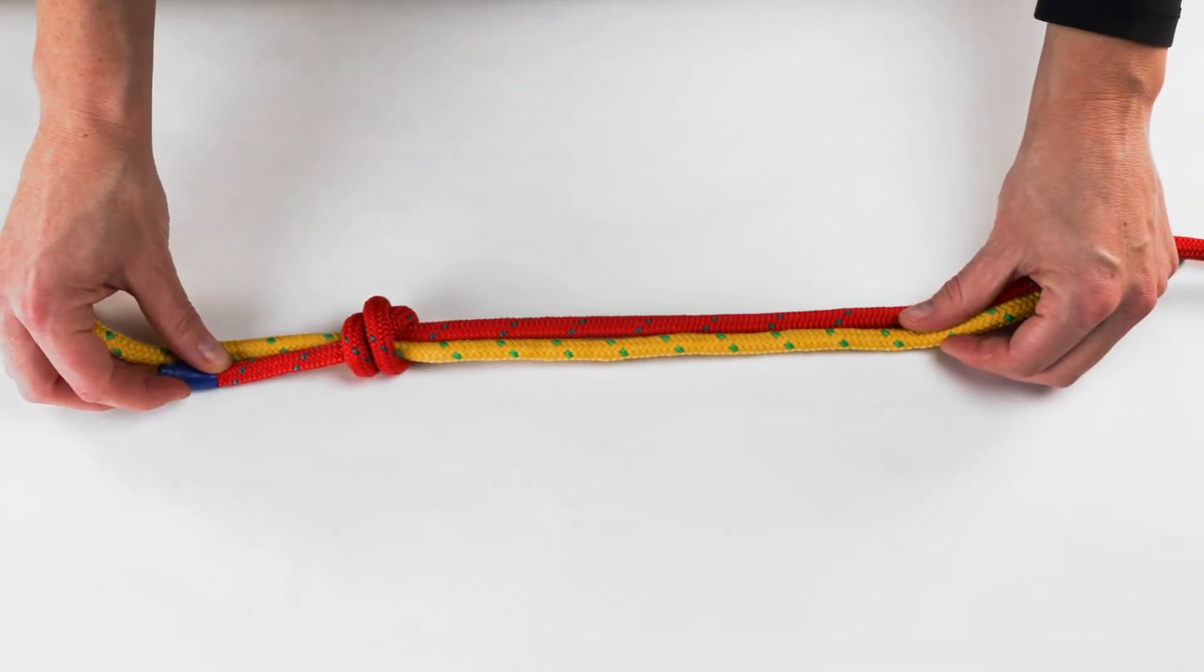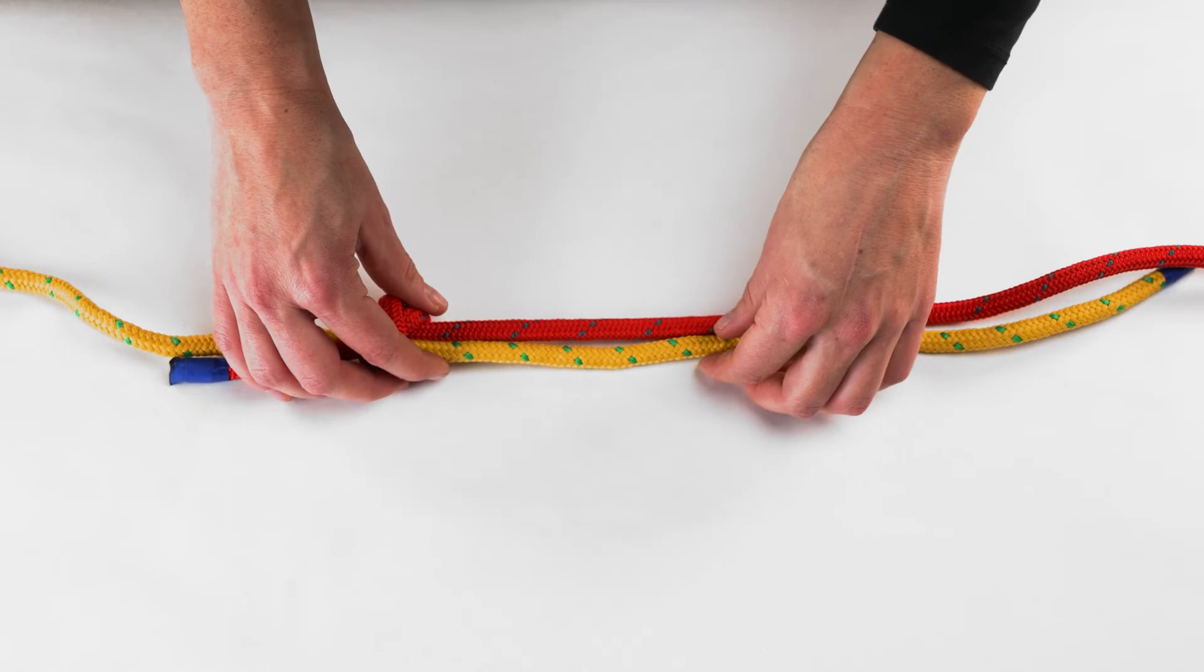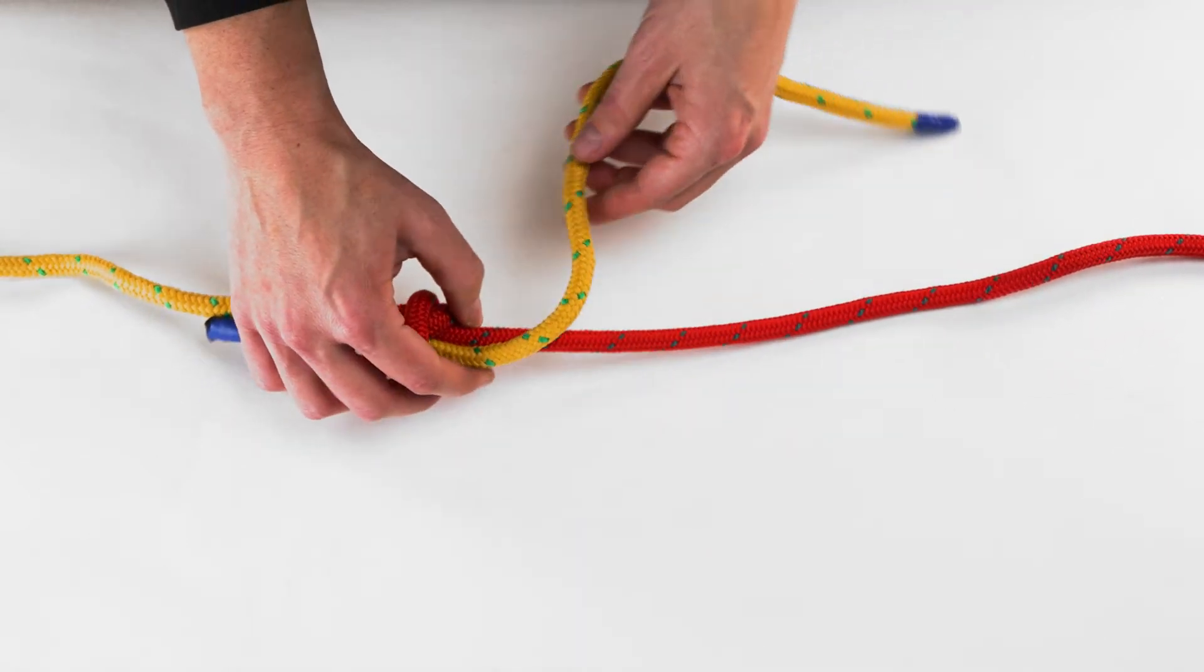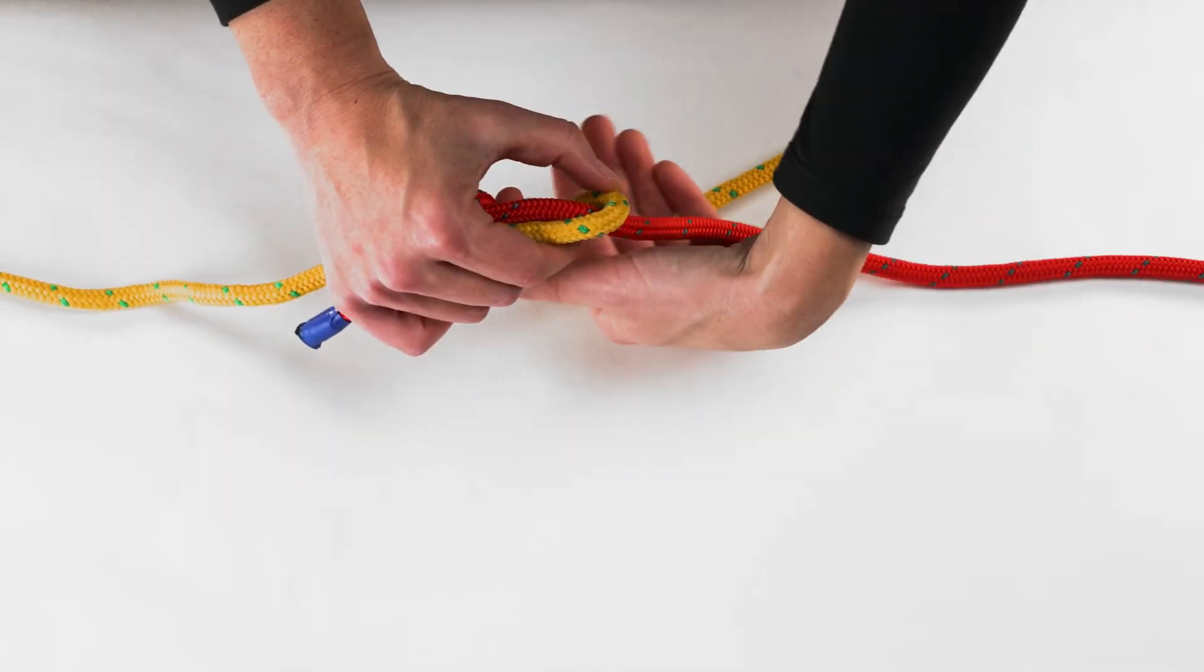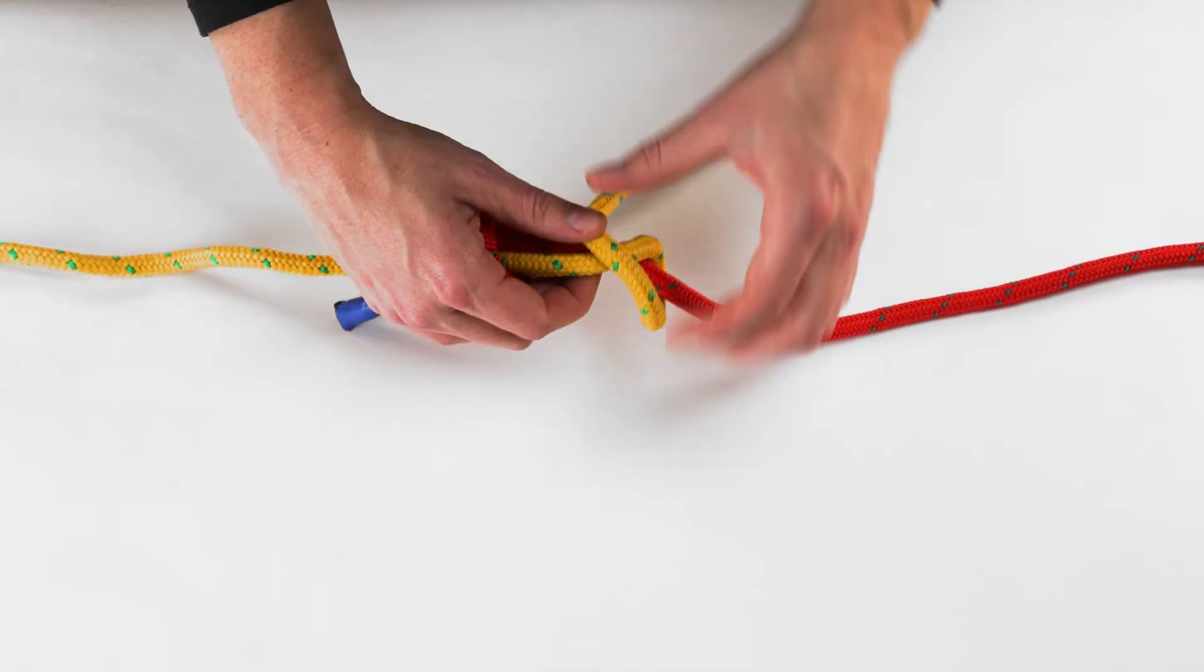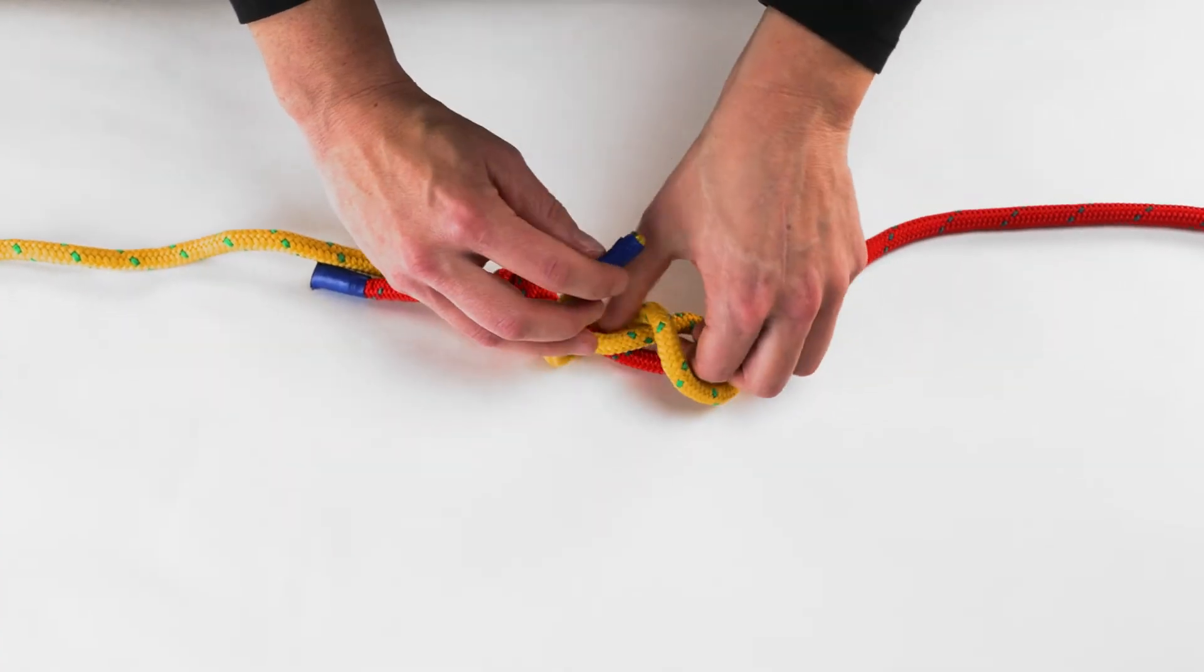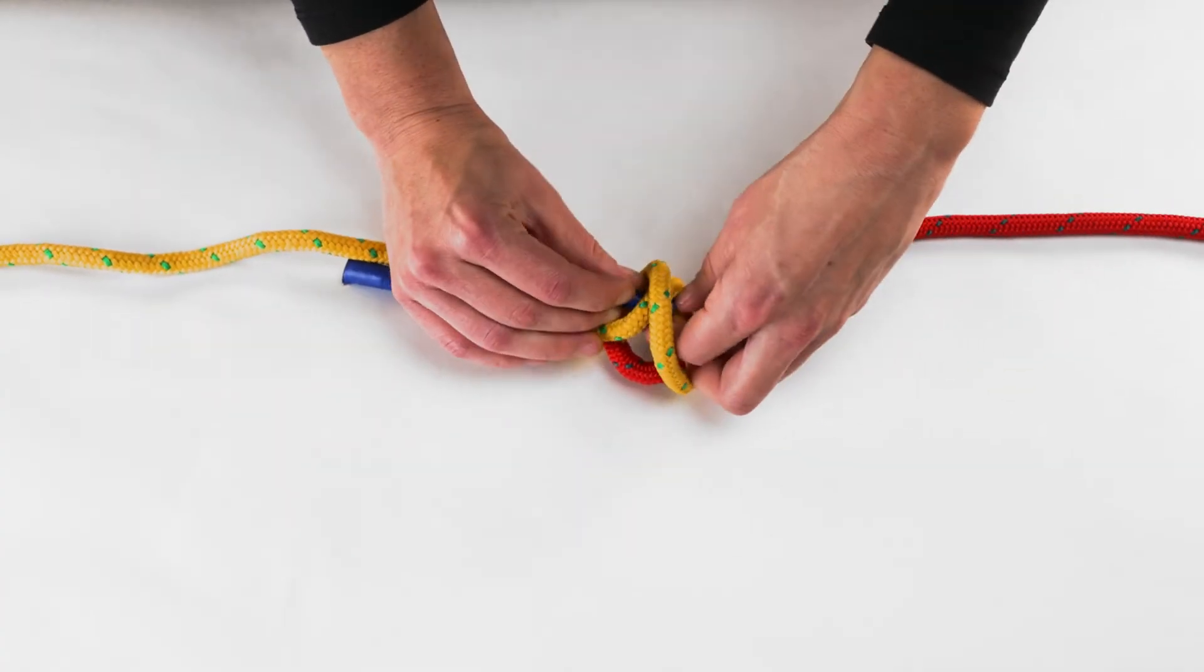Now, repeat the process with the other rope. Note that this rope is wrapping around in the opposite direction. Continue to wrap the rope around until another cross has formed. Feed the working end through the cross.